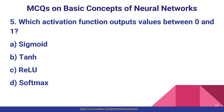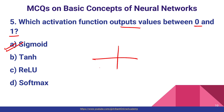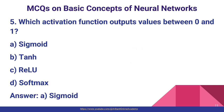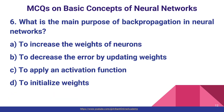Question number five: which activation function outputs values between zero and one? The answer is Sigmoid. The Sigmoid activation function outputs values in the range of zero to one. Option A.